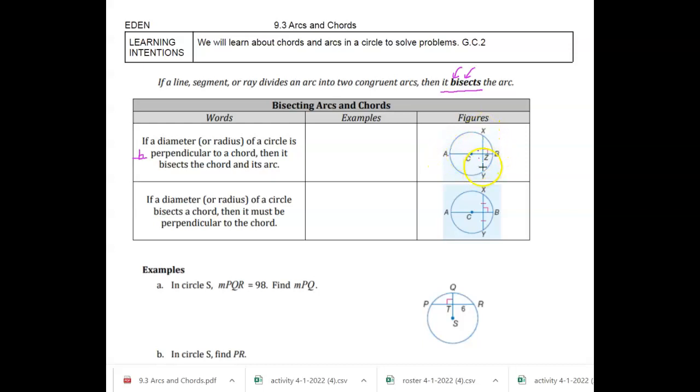AB is the diameter, XY is a chord. And so this theorem would apply. So because they're perpendicular, it means that XZ is congruent or the same length as YZ. And so that's the whole idea.